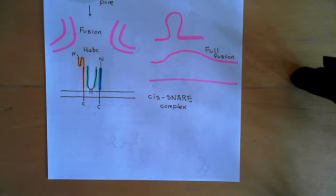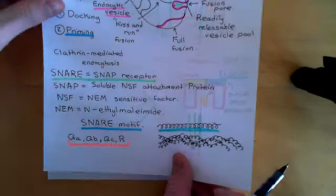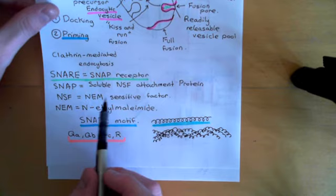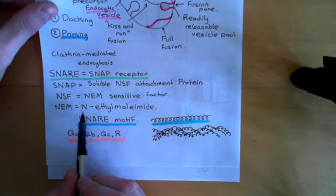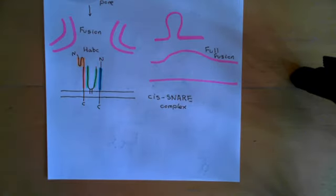The SNARE complex has done what it was supposed to do — it has fused the two membranes together, so it's no longer needed. If we're going to recycle these SNARE proteins and use them again, we now need the SNARE complex to break apart. This is where SNAP — soluble NSF attachment protein — and NSF — N-ethylmaleimide-sensitive factor — come into play. These two proteins are important in breaking apart these cis-SNARE complexes.